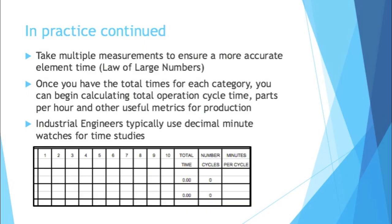Once you get a time for each element, you can decide how long it will take to do the entire cycle. From there you can say this many seconds or minutes per cycle means you'll get this many parts per hour — so you finally have some useful metrics for production. Industrial engineers typically use decimal minute watches for time studies because most go out to the third decimal. Minutes as opposed to seconds are easier for calculations and more accurate.